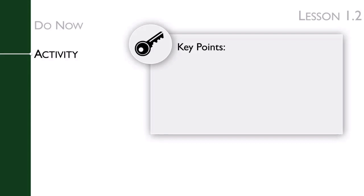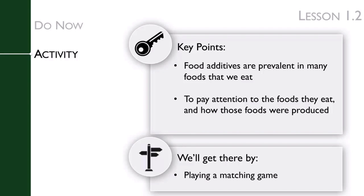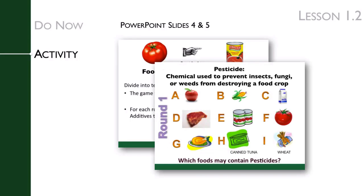The key points of this lesson's activity are that food additives are prevalent in many foods that we eat, and to have students pay attention to the foods they eat and how those foods were produced. We get there by having students play a matching game. Students will match common types of additives and food production techniques to the foods. You can use the PowerPoint slide deck to match the additives and foods together as a class.